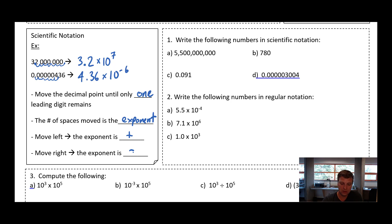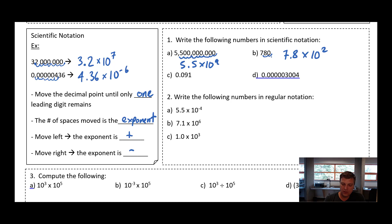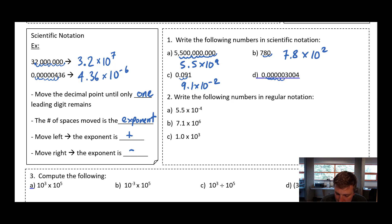Let's do a few examples. For the first one, I move the decimal one, two, three, four, five, six, seven, eight, nine spaces — so this is 5.5 times 10 to the 9. This number here is 780. I move one, two spaces — that's 7.8 times 10 to the 2. Notice I don't need to add those zeros; I could call it 7.80 times 10 to the 2 but I don't have to. This next number I move two spaces to the right, so 9.1 times 10 to the negative 2. And here I move one, two, three, four, five, six spaces to the right — so 3.004 times 10 to the negative 6. Notice that I do need these zeros in the middle; I can't get rid of them because they tell me the place value of that 4.